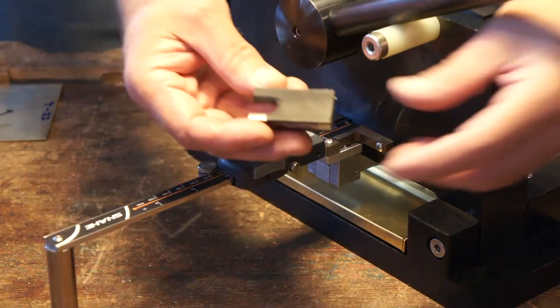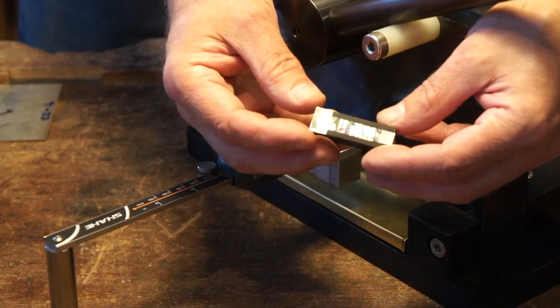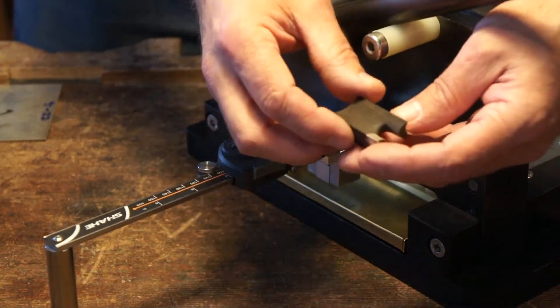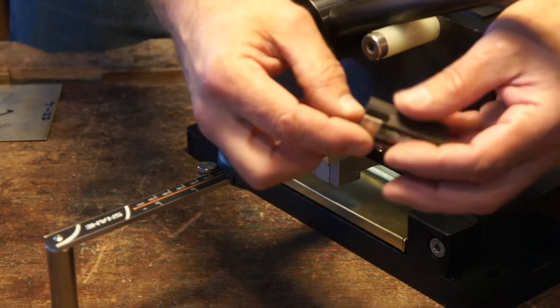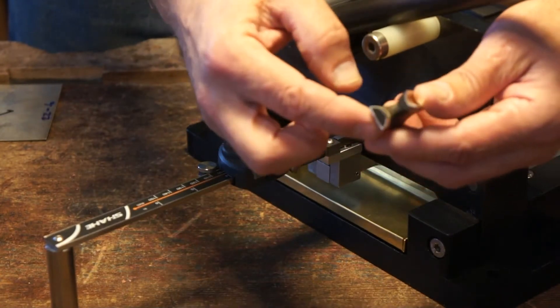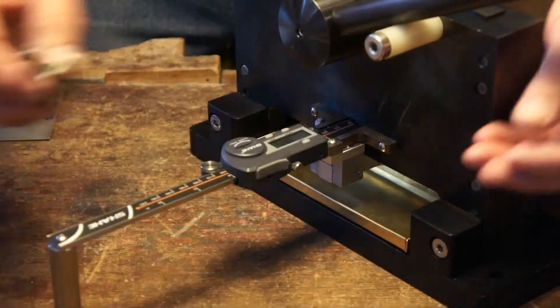I make frogs for violin and cello bows. This is a frog that I'm in the process of making. So I'm going to cut the pieces for the ferrule here on this frog.